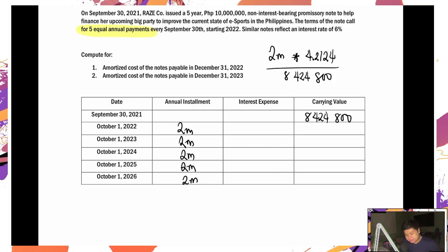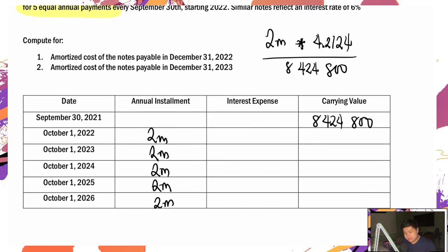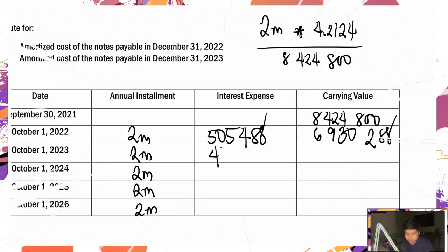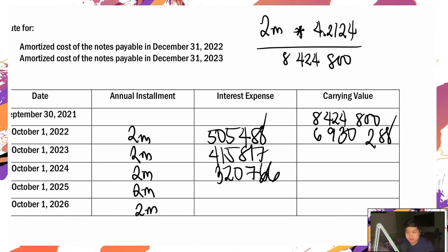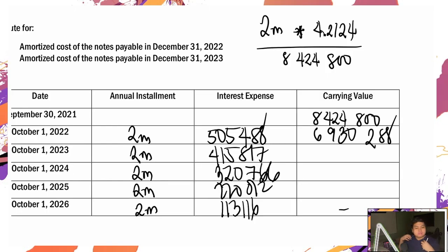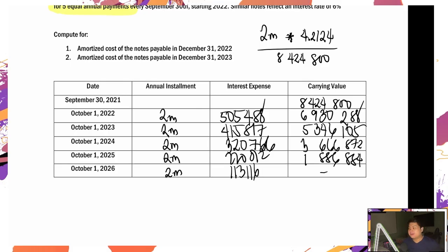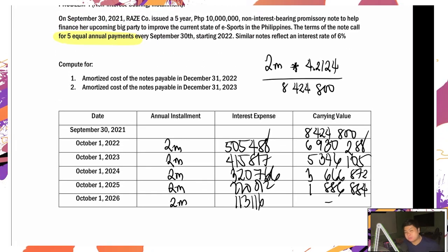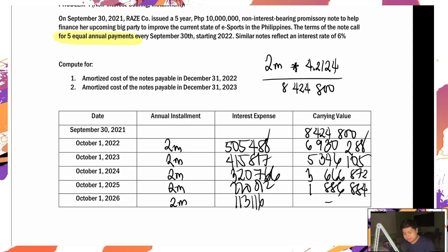Now let's fill this amortization table up — fast forward. Okay, yun yung completed amortization table natin. Anong hinihiling? Four amortized costs. So let's solve — doon tayo sa yellow muna.